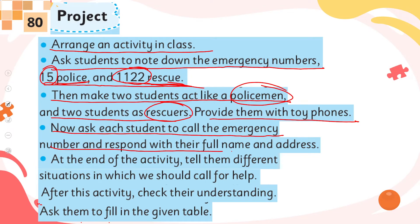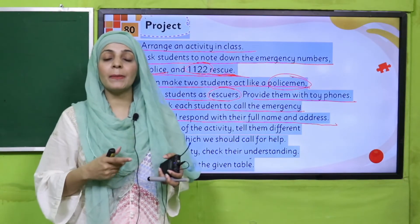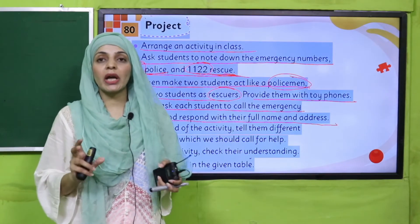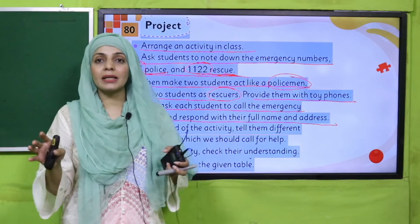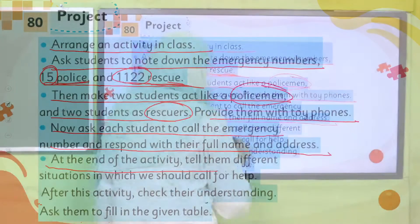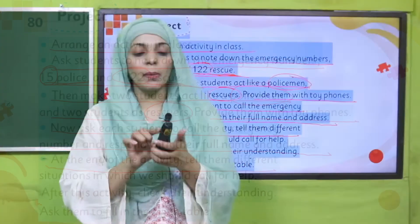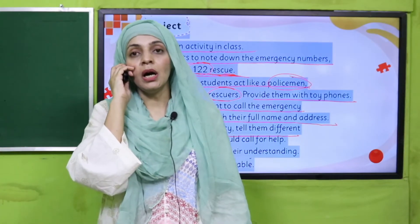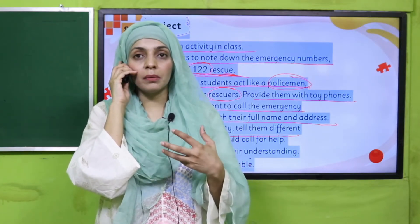Students have to call the emergency number and respond with their full name and address. Tell the class students to call the rescue team or police — if there is a robbery at someone's house, they will call the police; if there is an emergency situation, they will call 1-1-2. Each student will come one by one. For example: 'Hello, Assalamu Alaikum, my name is Farheen and I am calling from PIA Society, Lahore — this is my address.'